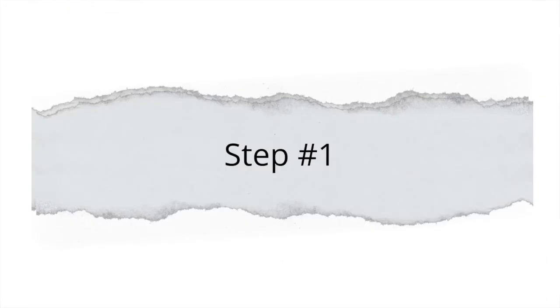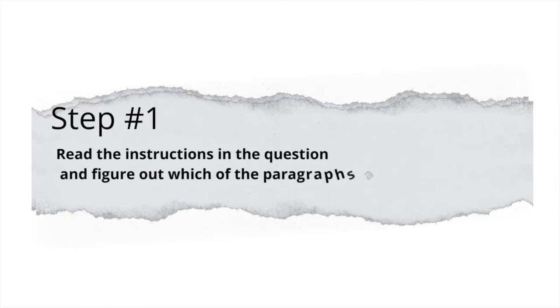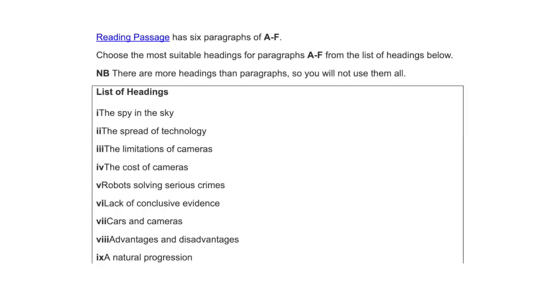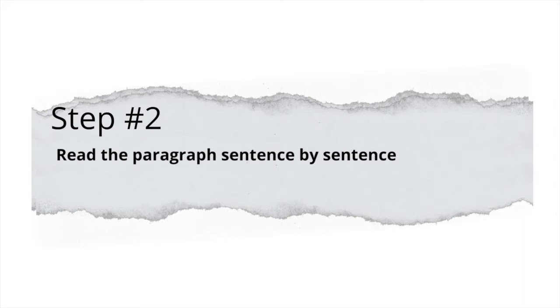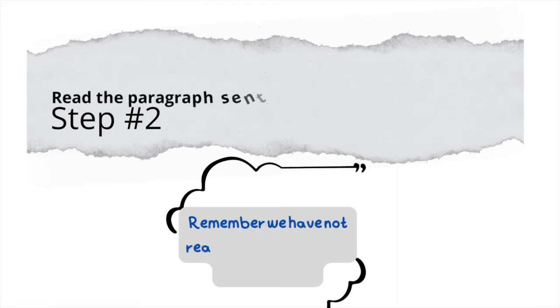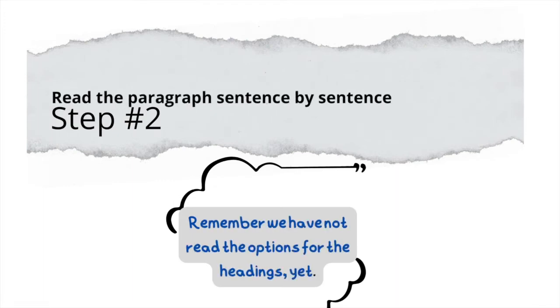With that out of the way, let's start with step number one. The first thing we do is to read the question and figure out which of the paragraphs we are supposed to title. For example, here you have to title from paragraph A till paragraph F, so we will start from paragraph A. The next step is to read the paragraph, not the headings. Remember, we have still not looked at the headings options that we were given in the question.